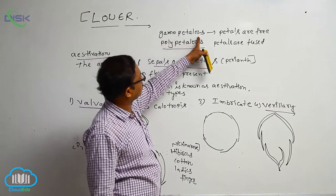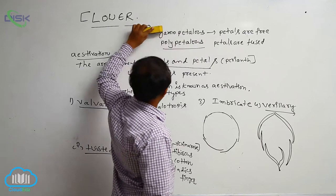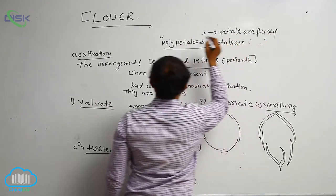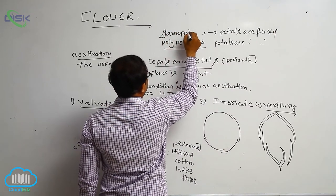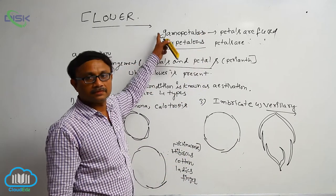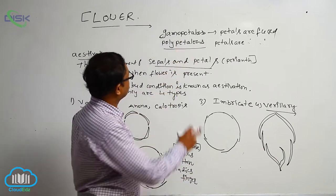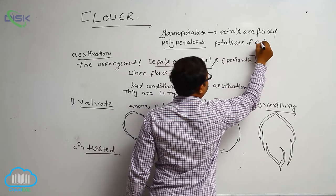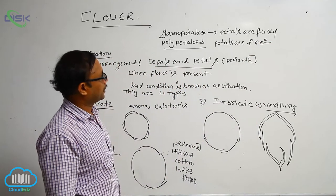Petals in a fused condition — this is known as gamopetalous. Polypetalous means petals are in a free condition. So, petals in a fused condition is known as gamopetalous.